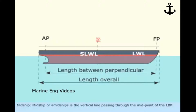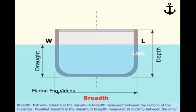Extreme Breadth is the maximum breadth measured between the outside of the ship sides. Molded Breadth is the maximum breadth measured at midship between the inner sides of ship side plating.